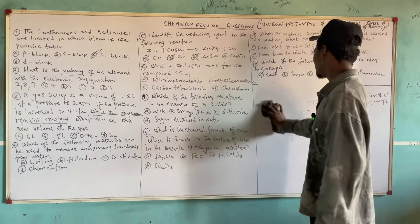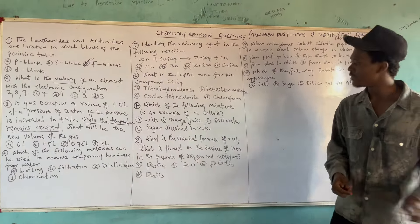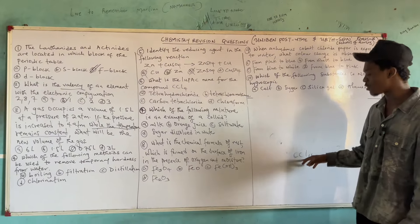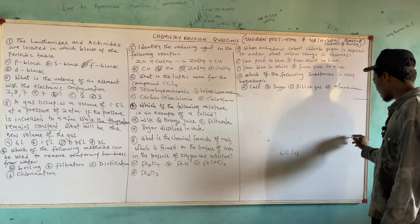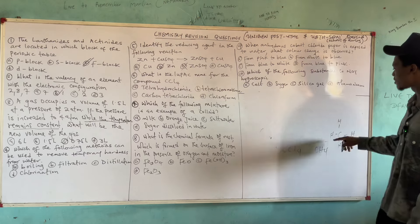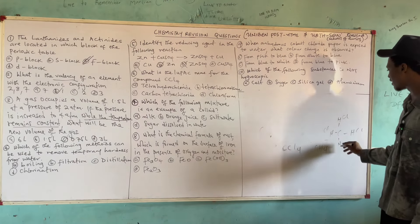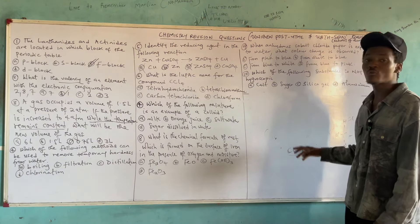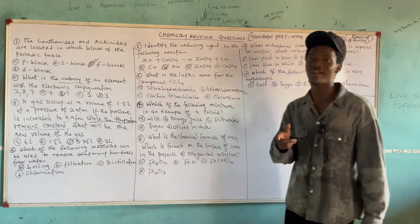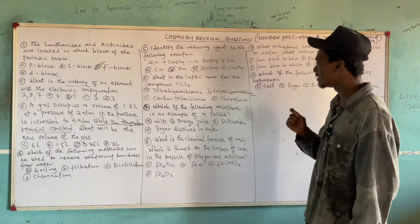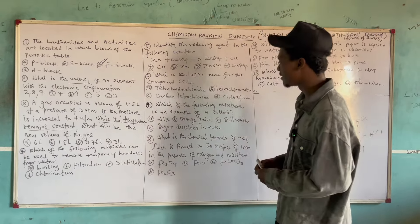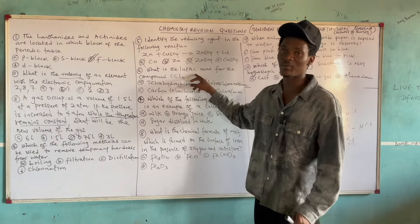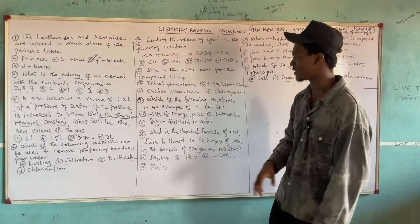Question 6: What is the IUPAC name for CCl₄? This compound comes from methane (CH₄) by substituting all four hydrogen atoms with chlorine. The common name is carbon tetrachloride, but the IUPAC name is tetrachloromethane. IUPAC stands for International Union of Pure and Applied Chemistry. So the correct answer is option B, tetrachloromethane.